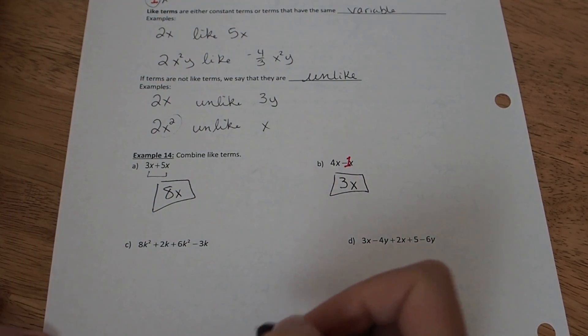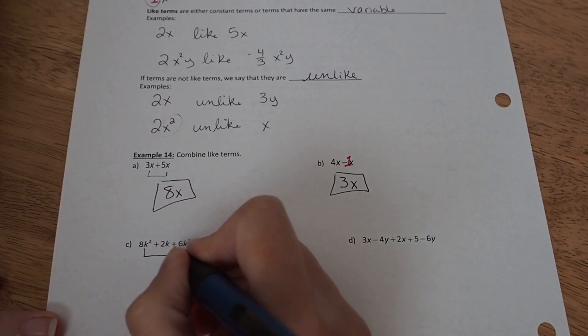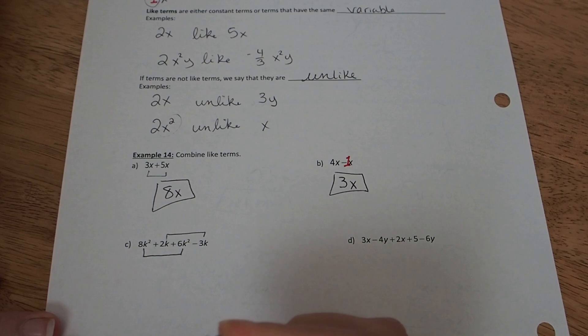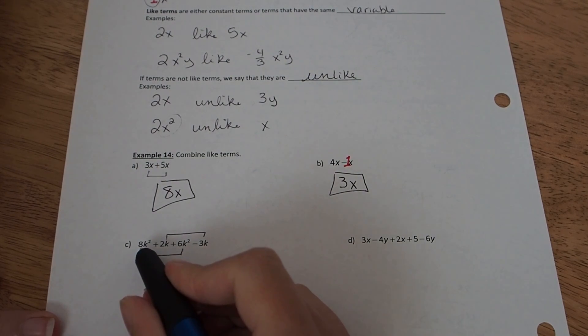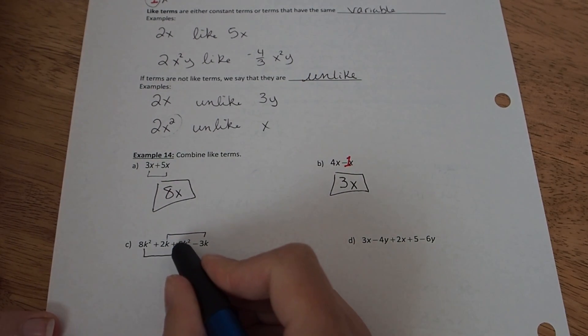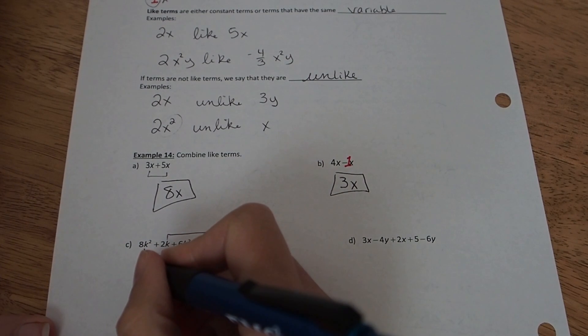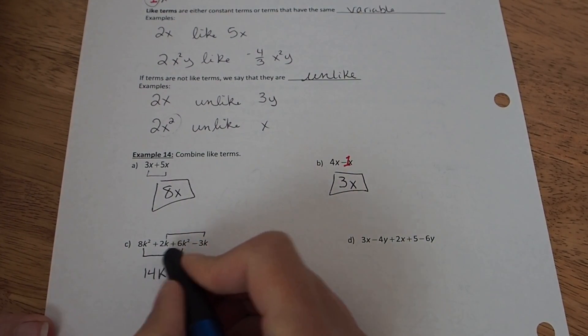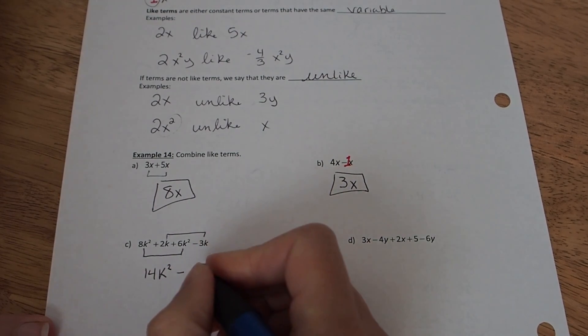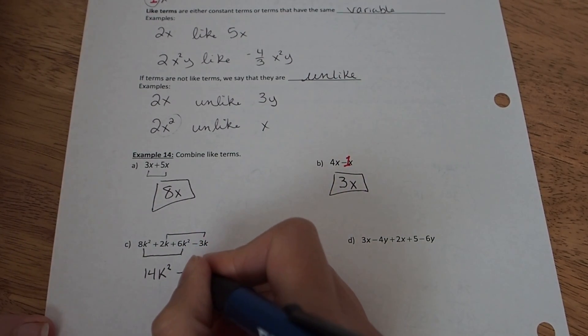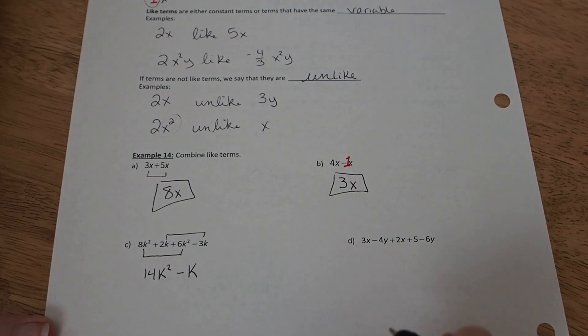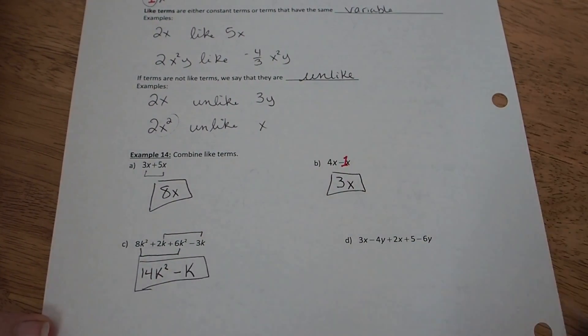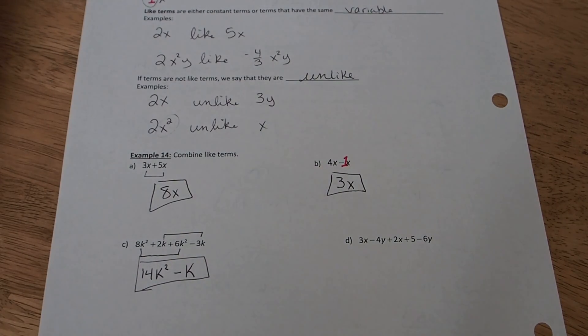In part c, I want to add up like terms. I'm going to have two sets since the k squareds are like and the k's are like. So first the k squared, I'll have 8k² plus 6k² gives us 14k². And then 2k minus 3k will give us negative 1k, but I don't need to write 1. 1 can be the invisible coefficient, so I can just say minus k. It's assumed to be a 1 in front of any variable with no visible coefficient.